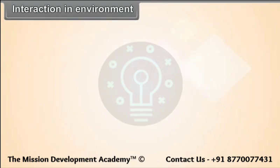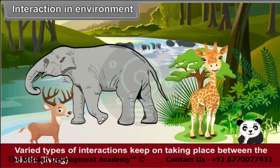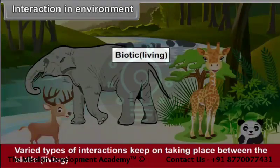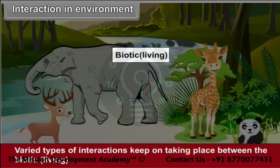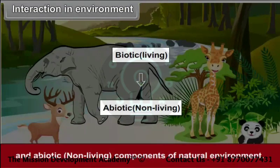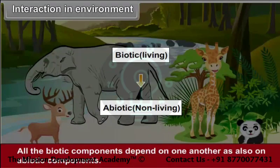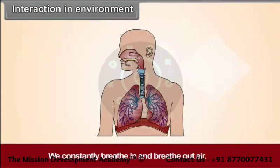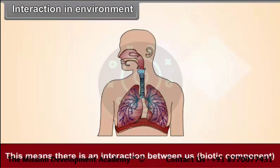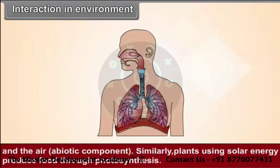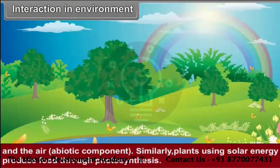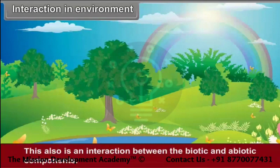Interactions in Environment: Varied types of interactions keep on taking place between the biotic, i.e., living, and abiotic, i.e., non-living, components of the natural environment. All the biotic components depend on one another as also on abiotic components. We constantly breathe in and breathe out air — this means there is an interaction between us, the biotic component, and the air, the abiotic component. Similarly, plants using solar energy produce food through photosynthesis, which is also an interaction between biotic and abiotic components.